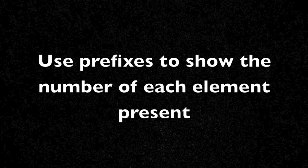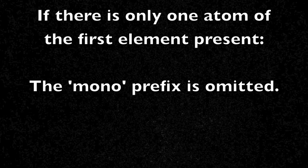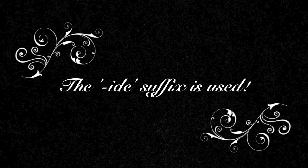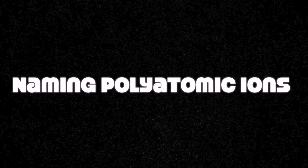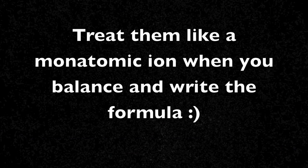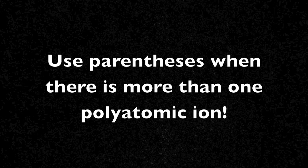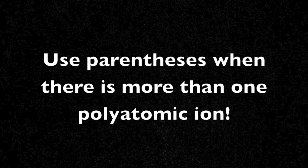To name covalent compounds, Bella, you use prefixes to show the number of each element present. If there is only one atom of the first element present, the mono prefix is omitted. The -ide suffix is used just like in ionic compounds. Oh yeah? Phosphorus, you think you're so cool? I know how to name polyatomic ions. All you have to do is treat them like a single monatomic ion when you balance and write the formula. Then you use parentheses, but only when there is more than one polyatomic ion. Beat that, phosphorus!